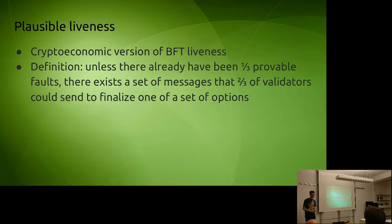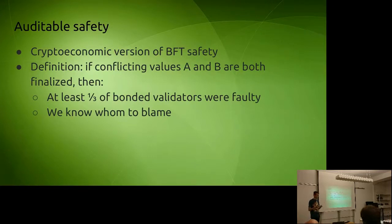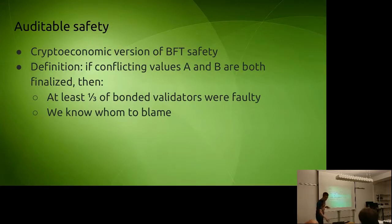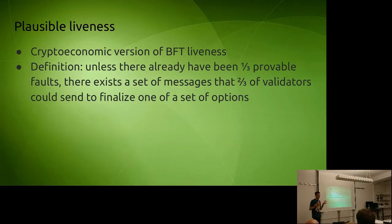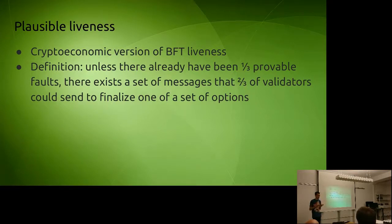Plausible liveness means the algorithm does not get stuck. To satisfy the safety condition, you need mechanisms for penalizing validators for bad actions. But you don't want the opposite problem: a badly designed algorithm might accidentally get into a situation where it hasn't finalized anything and can't finalize anything without some portion of validators voluntarily violating their penalization conditions and sacrificing their deposits. Plausible liveness means the protocol can't get stuck — there always exists a path toward finalizing some block.